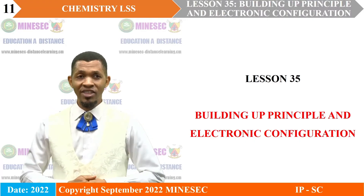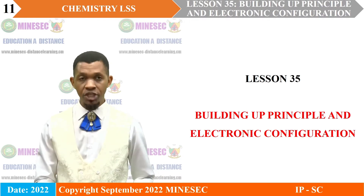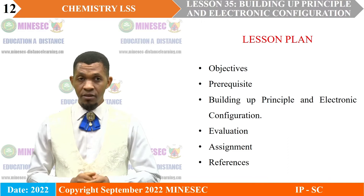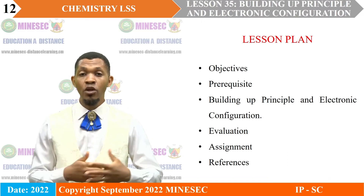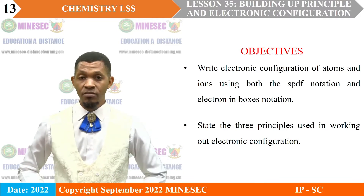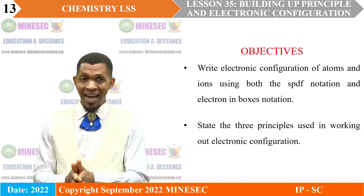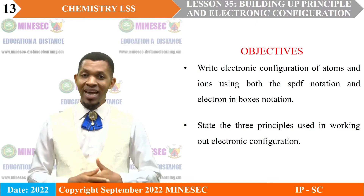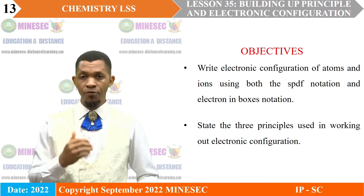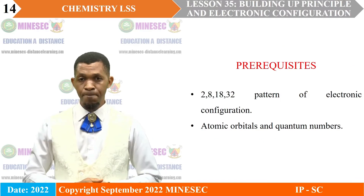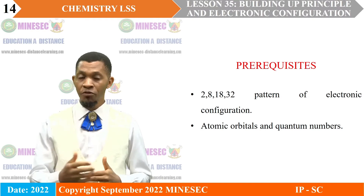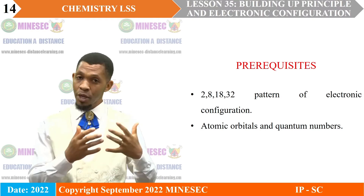Today's lesson is titled Building Up Principle and Electronic Configuration. The outline of our lesson is as follows: Objectives, Prerequisite, Building Up Principle and Electronic Configuration, Evaluation, Assignment, and References. By the end of this lesson, you should be able to write electronic configurations of atoms and ions using both the SPDF notation and electron-in-boxes notation, and state the three principles used in working out electronic configuration. As a prerequisite, you must have mastered the 2-8-18-32 pattern of electronic configuration and atomic orbitals and quantum numbers.